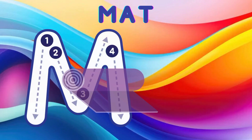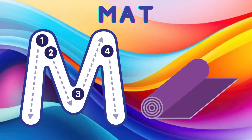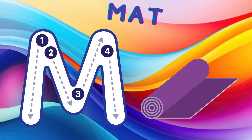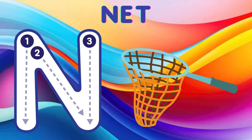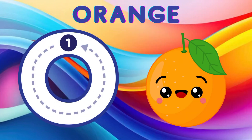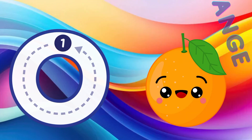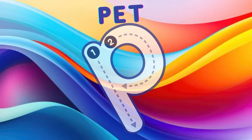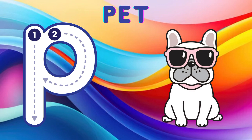M is for mat, m-m-mat. N is for net, n-n-net. O is for orange, o-o-orange. P is for pet, p-p-pet.